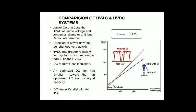In AC, what is corona loss? Corona loss occurs when two conductors are at high voltages and the air between them becomes ionized. Because of this ionization, current passes through the air, producing light and sound — this is called corona loss. The resulting light and sound cause losses in the electrical system. In HVDC, there is corona loss, but it is comparatively low.